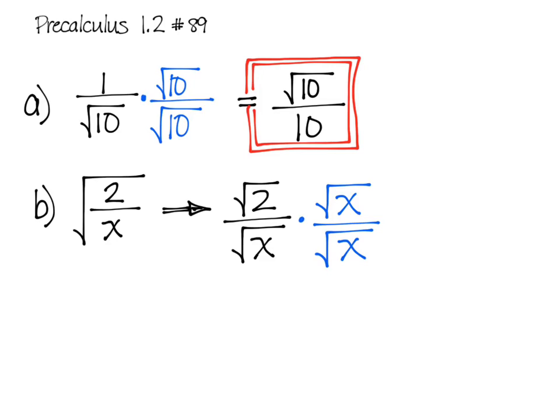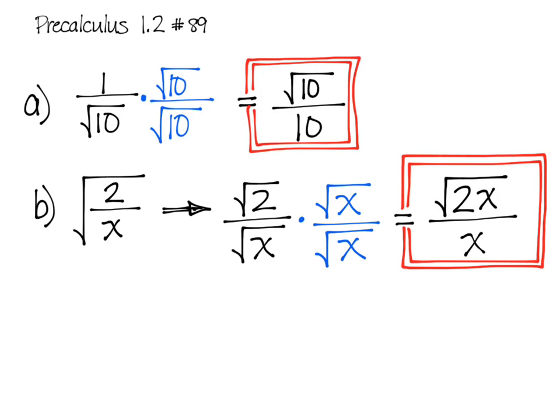The denominator, square root of x times the square root of x gives me x, so my denominator, I'm only really worried about what happens here. The numerator is I'm just going to multiply the square root of 2 times the square root of x, which gives me the square root of 2 times x.